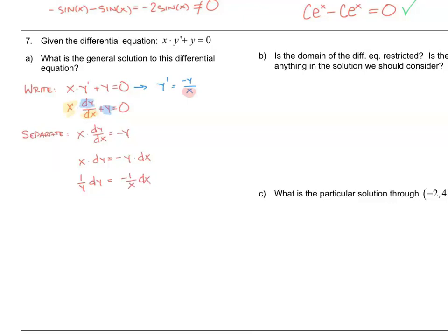I want to highlight one thing: I chose to keep the negative sign on the right-hand side of the equation. I could have divided both sides by the opposite of y, and that negative sign would have moved to the left. But here's a piece of advice: leave as much stuff on the right-hand side as you can — leave constants and negative signs over there. That makes your job in the long run much easier.